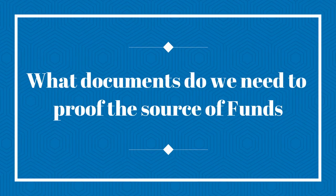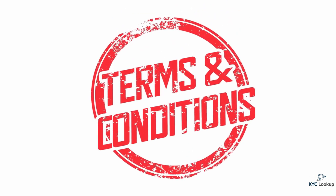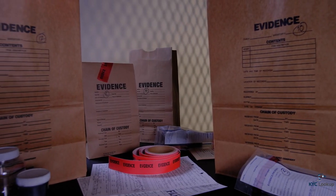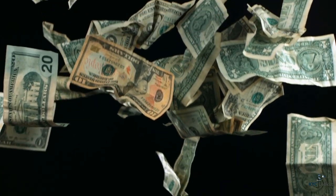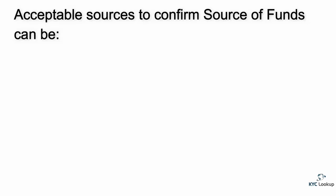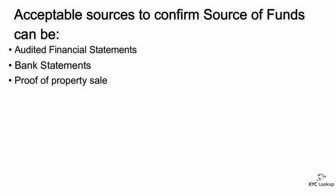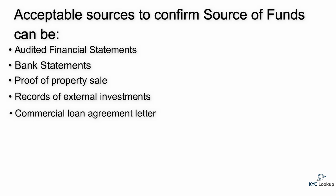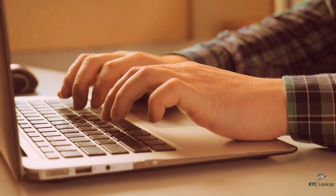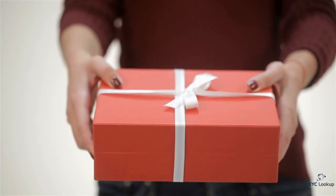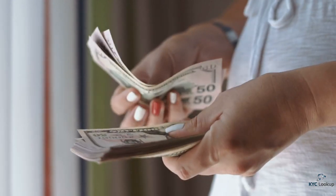What documents do you need to prove the source of funds? In order to satisfy the requirement for source of funds, it is normally advised to request evidence from the customer being onboarded to fully determine where the funds were required from. Acceptable sources to confirm source of funds can be audited financial statements, bank statements, proof of property sale, records of external investments, commercial loan agreement letter, grant of probate or copy of a will, or a gift from a friend or relative. However, a personal statement explaining the details and circumstances of how the gift was presented will be required, as well as source of funds from the person providing the gift.